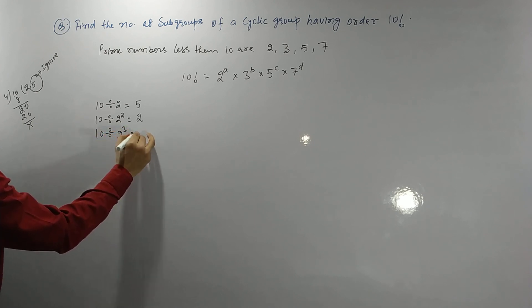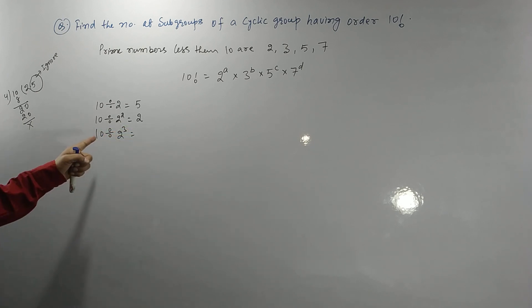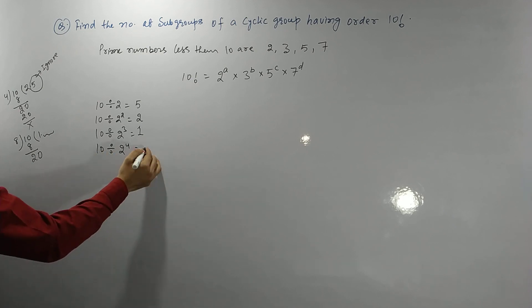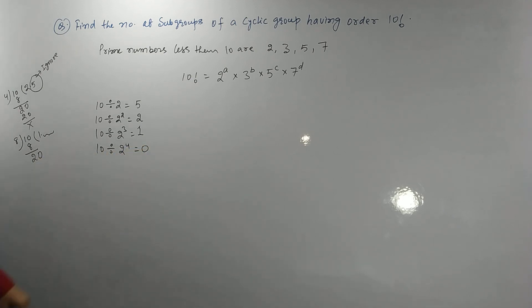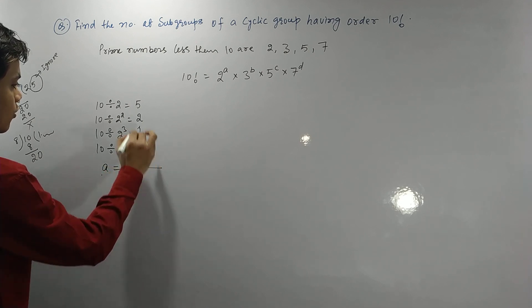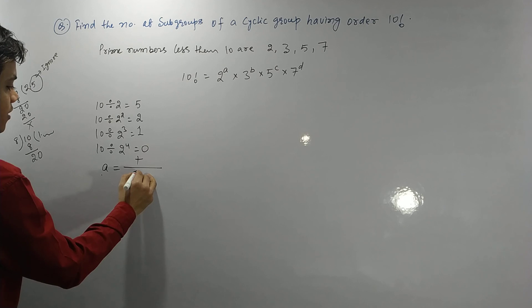And 10 divided by 2 to the power 4 is certainly 0. So this is the way. Now what is your a? Your a is the sum of all these: 5 plus 2 plus 1, which gives a = 8. This is the way to get it.